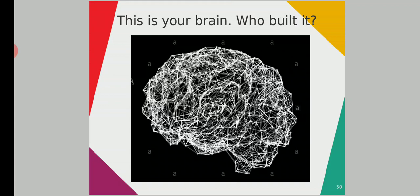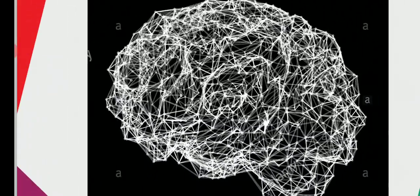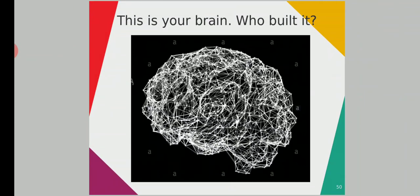This is your brain. Who built it? These complicated neural circuits — the neural circuit in one person's brain is different from another person's brain. So there are different neural circuits and different brain structures. Your brains are different. Your neural circuits are different. Who built it? Who built your brain?